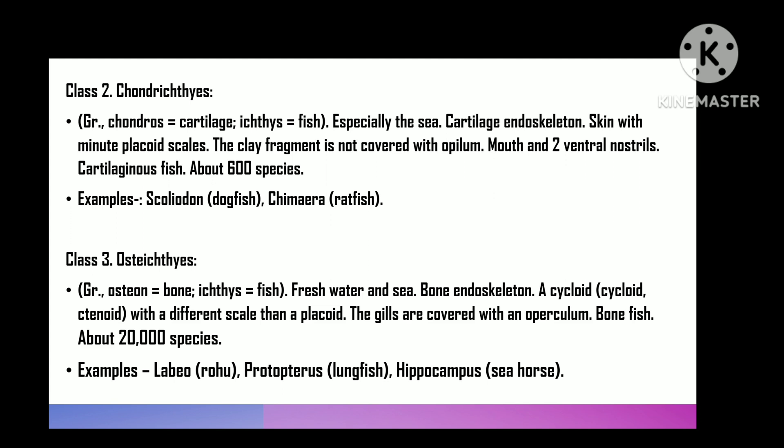Class 3 is Osteichthyes — 'osteon' means bone, 'ichthys' means fish — fresh water and marine. Bony endoskeleton, skin having various types of scales (cycloid, ctenoid) other than placoid. Gill slits covered with operculum, males without claspers. Bony fishes, approximately 20,000 species. For example, Labeo (rohu), Protopterus (lungfish), and Hippocampus (seahorse).